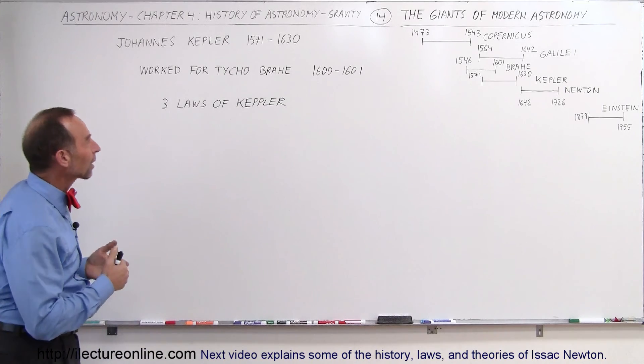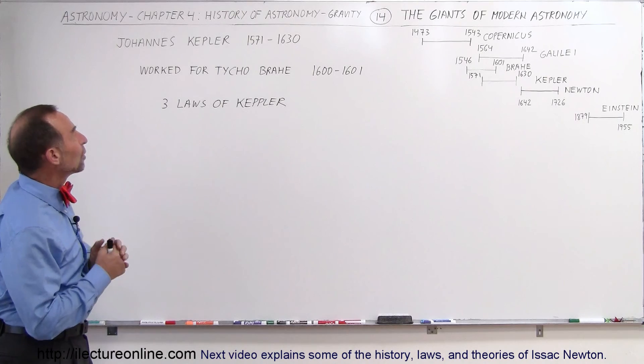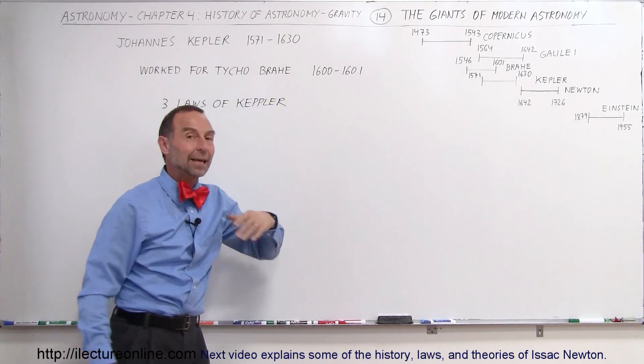Kepler started working for Tycho Brahe when he was about 29 years old. Kepler was born in 1571 and towards the end of the life of Tycho Brahe he ended up meeting him.